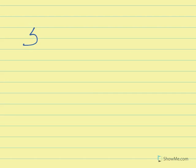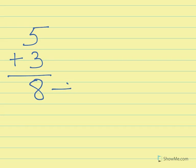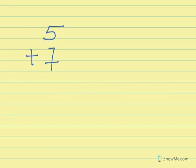Suppose 5 plus 3 — the answer is 8, as everybody knows. 8 is a single digit number, so it will be a non-carrying number. But if we take another number like 5 plus 7, the answer is 12, which is a double digit number, so it will be called a carrying number.